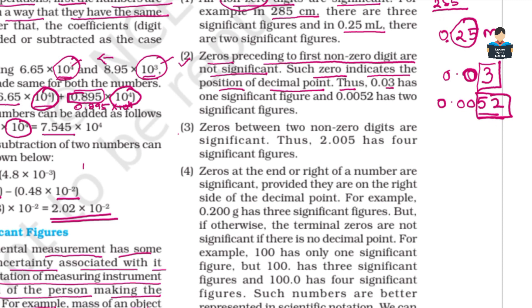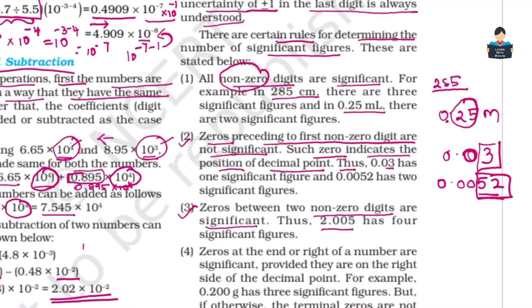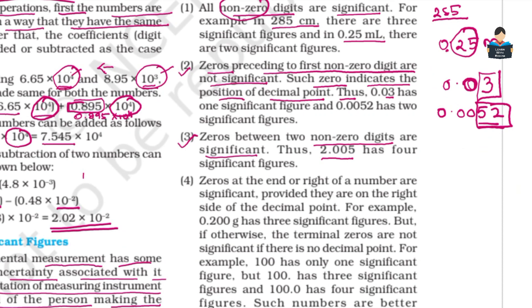Rule 3: Zeros between two non-zero digits are significant. For example, in a number like 2.005, the zeros between 2 and 5 are significant, giving 4 significant figures.